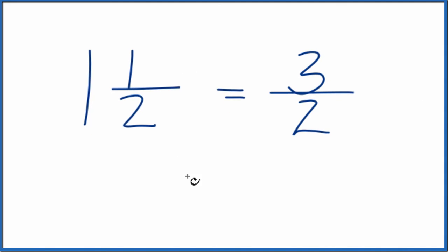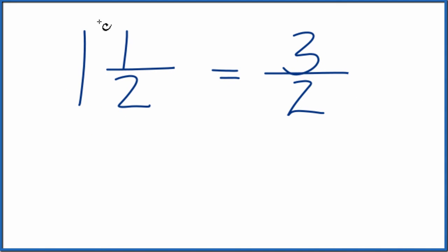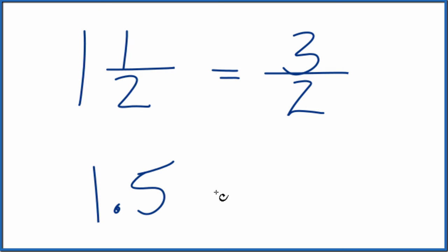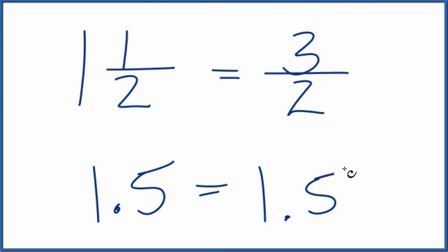And these are the same numbers. If you change 1 and 1 half to a decimal, you have 1.5. If you divide 3 by 2, you get 1.5. So they're the same thing — it's just that we have them written in a different format.